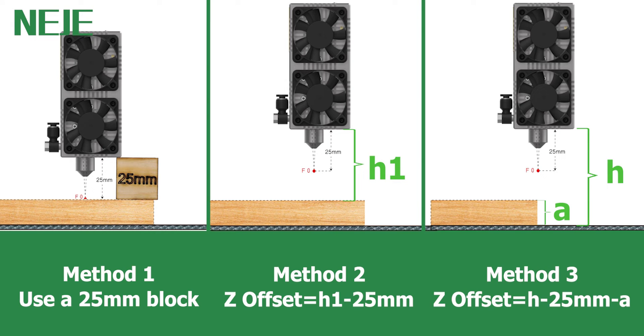Method 3: if you don't want to measure the distance for each of your projects, then you can use method 3. The Z-offset equals the distance from the edge of the module to the honeycomb board, minus 25 millimeters, and then minus the thickness of your material. You can pick a method which is good for you.